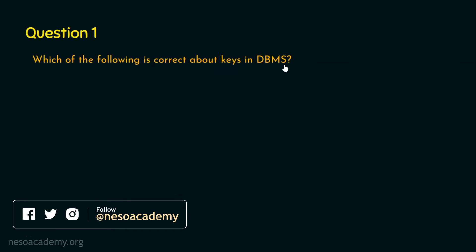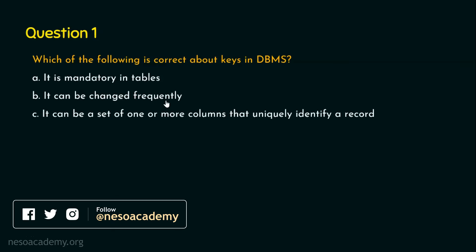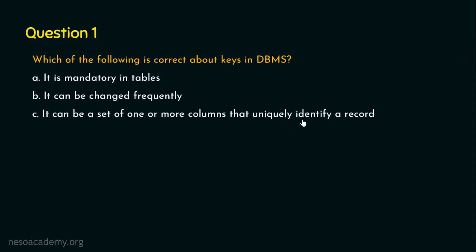The options are: Option A, it is mandatory in tables. Option B, it can be changed frequently. Option C, it can be a set of one or more columns that uniquely identify a record. And Option D, all of the above. The right answer for this question is Option C — a key can be a set of one or more columns or attributes that uniquely identify a record.